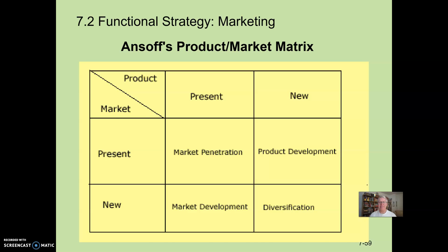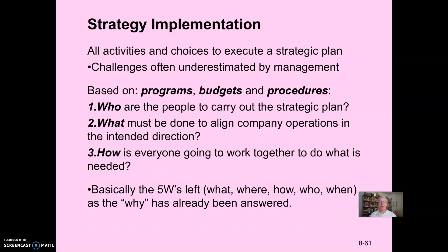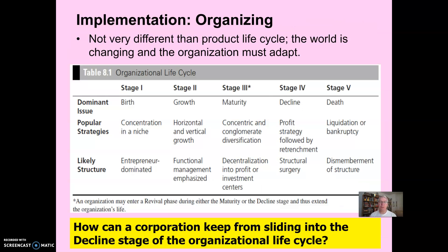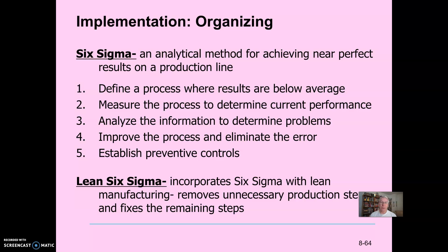The eighth chapter was strategy implementation — how do we organize ourselves? We need to know who will carry out the strategic plan, what has to be done to align operations in our intended direction, and how everyone will work together. This involves different organizational structures, and one designs the structure based on the strategy. Most organizations go through stages: birth, growth, maturity, decline, and potentially death — and we want to find ways to move back into an earlier growth or maturity stage when decline begins. One tool used extensively, and that you used in the simulation, is Six Sigma training to reduce defects, with Lean Six Sigma as a further development.